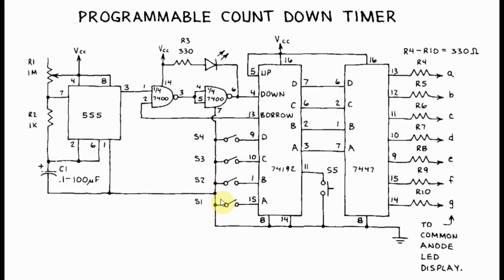These 4 switches are used to assign the 4-bit preset value which is then loaded into the 74192 by pressing on this push button here.